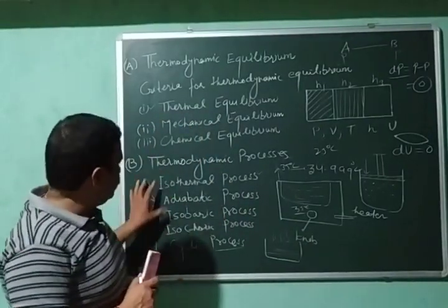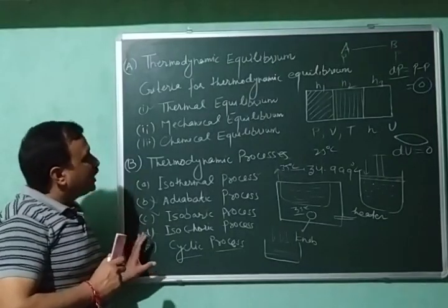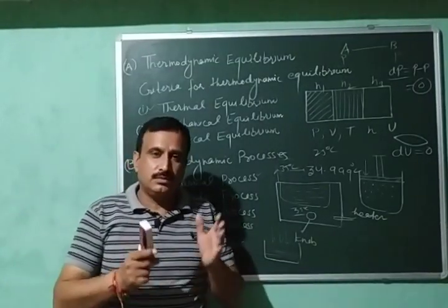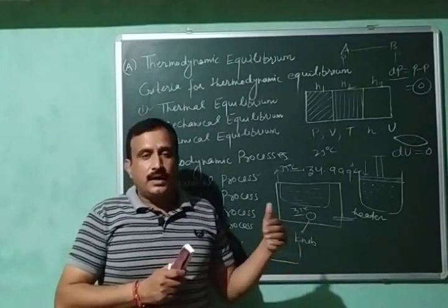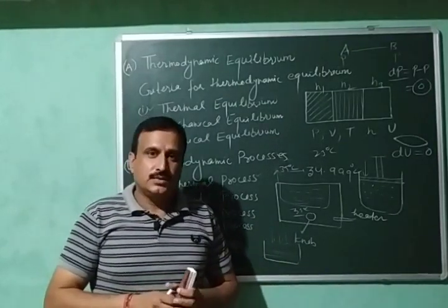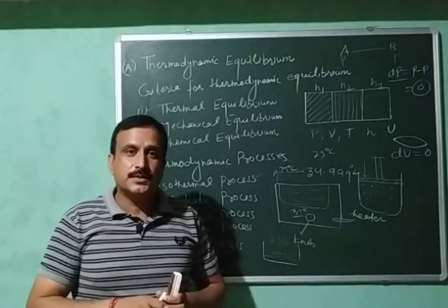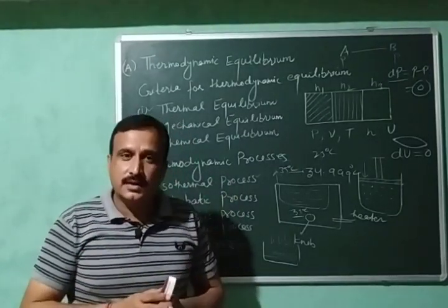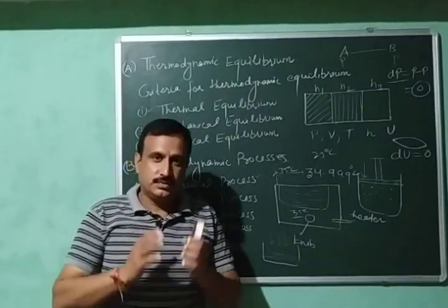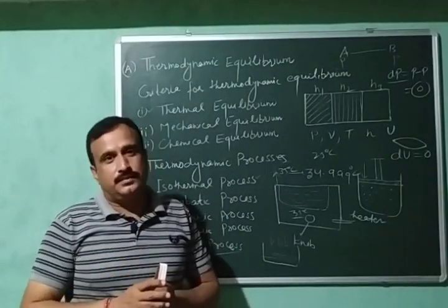So these are the five different types of thermodynamic processes we will study in this chapter. I have explained thermodynamic equilibrium and various thermodynamic processes. If you have any doubts or questions, you can leave them in the comment box or contact me on my WhatsApp or Telegram group. In my next video I will discuss reversible and irreversible processes, internal energy, and modes of exchange of energy between system and surroundings. Thank you very much.